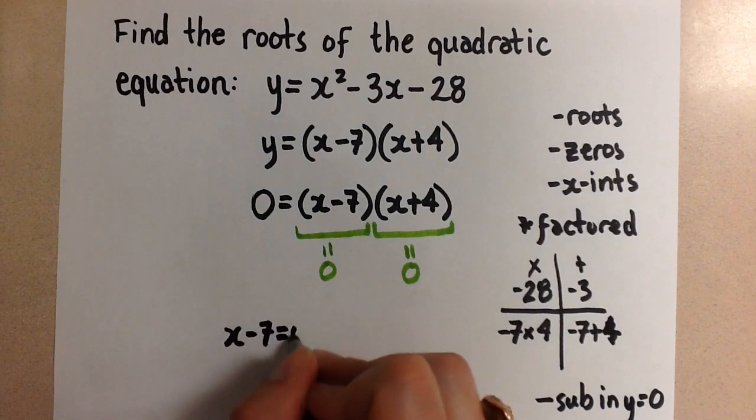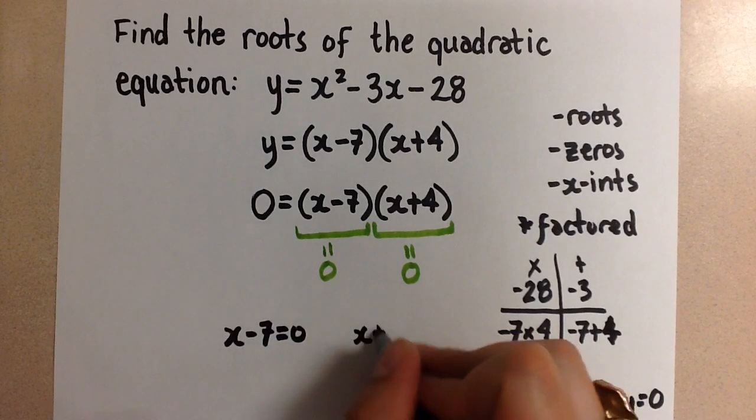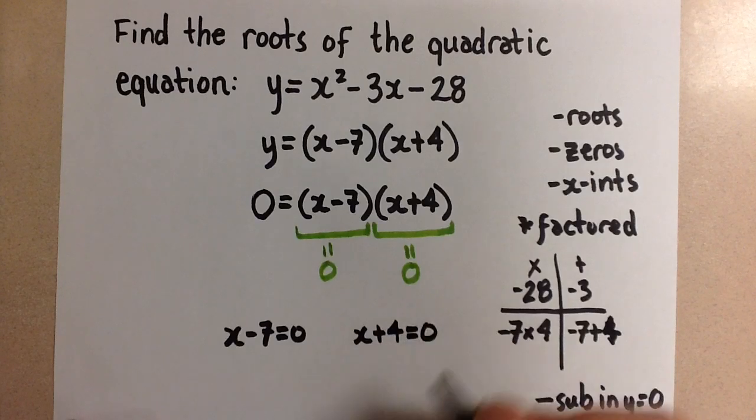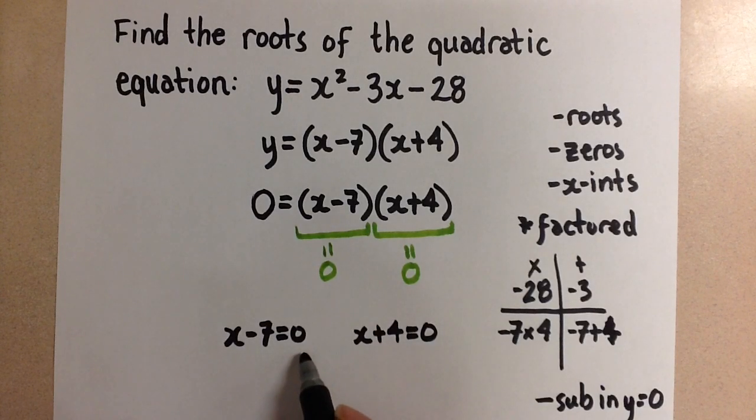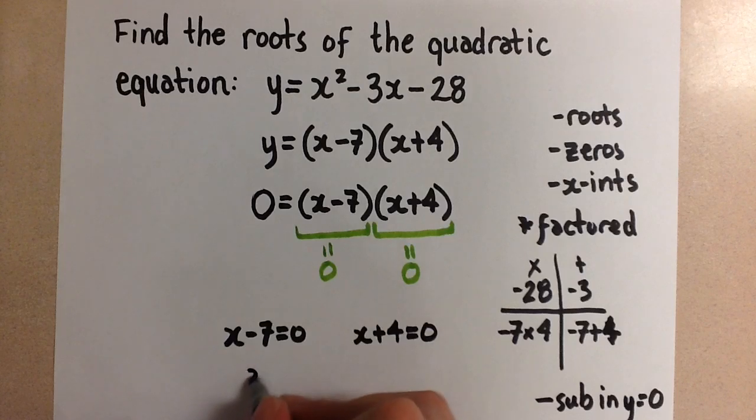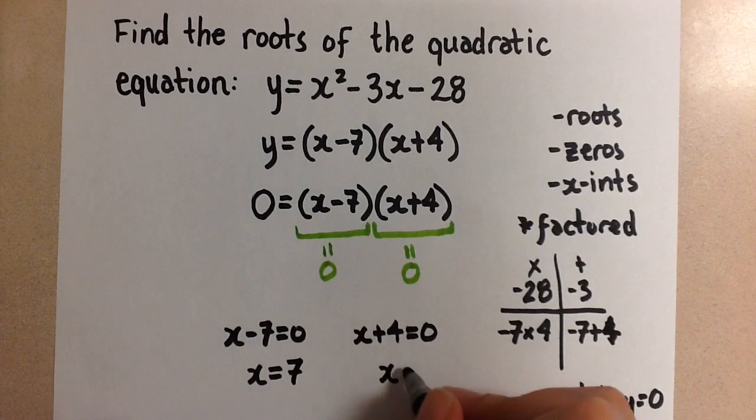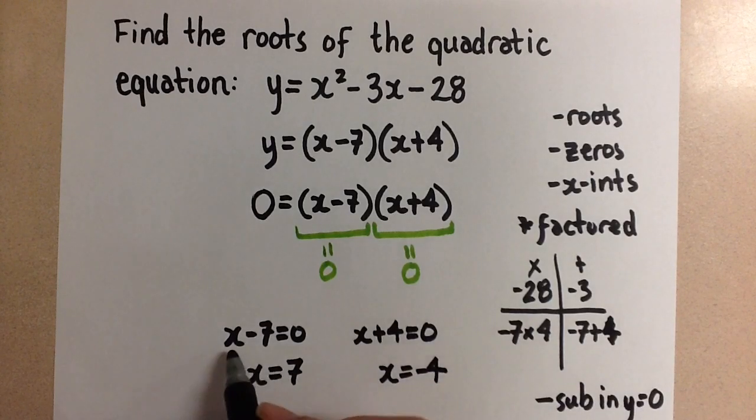x minus 7 has to equal 0 and x plus 4 equals 0. And now this is a simple one-step equation to solve for x. x here will be positive 7 and x here will be negative 4.